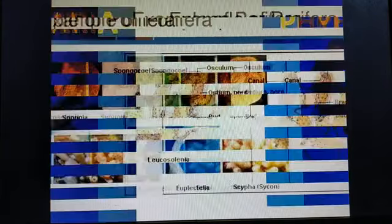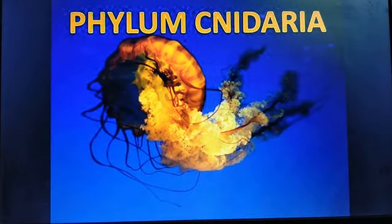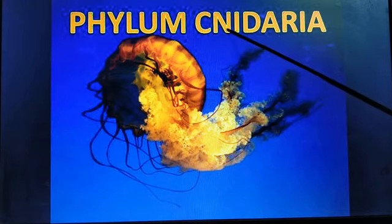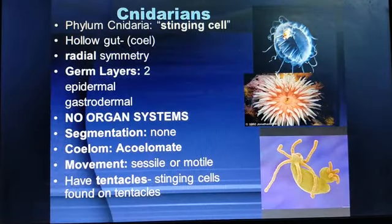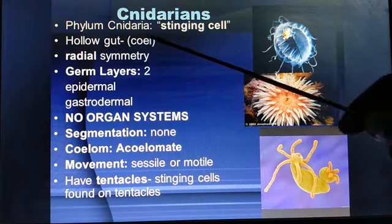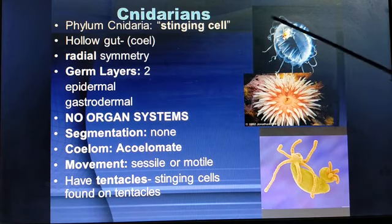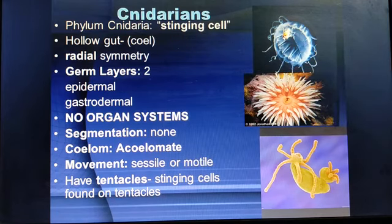Next, we will learn about Phylum Cnidaria — sea anemones. Cnidaria includes hydra, jellyfish, corals, and sea anemones. The special characteristic is that Cnidaria means 'stinging cells.' They have minute stinging cells which release toxic substances.